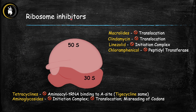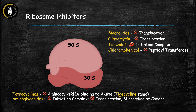Quick recap of ribosome inhibitors: 30S inhibitors include tetracyclines, which block aminoacyl-tRNA binding to the acceptor site, and aminoglycosides, which inhibit the initiation complex, inhibit translocation, and cause codon misreading. The 50S inhibitors are macrolides and clindamycin (inhibit translocation), linezolid (inhibits initiation complex formation), and chloramphenicol (inhibits peptidyl transferase). All of these are bacteriostatic except aminoglycosides, which are bactericidal.